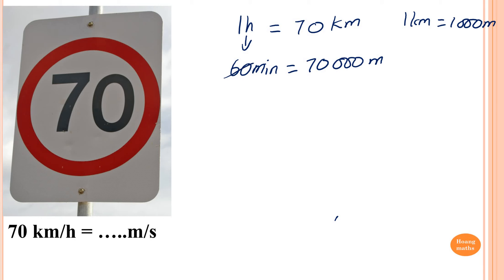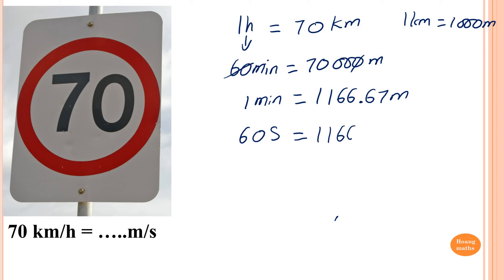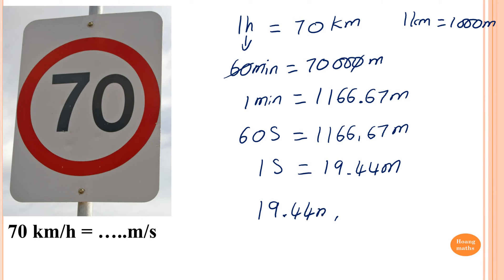I divide by 60 both sides because I want to get rid of the 60 and work out 1 minute. So 1 minute gives me 70,000 divided by 60, which is 1,166.67 meters. Then remember, 1 minute is 60 seconds. So 60 seconds equals 1,166.67 meters. I divide by 60 both sides, giving me 1 second equals 19.44 meters. So therefore, I can write 19.44 meters per second.